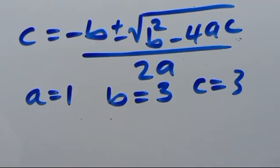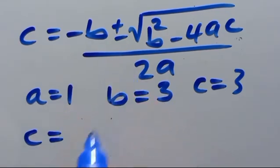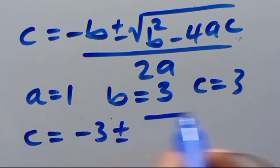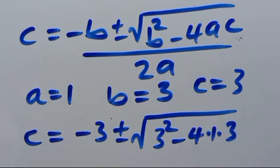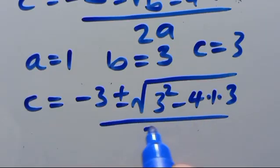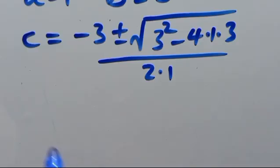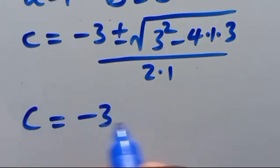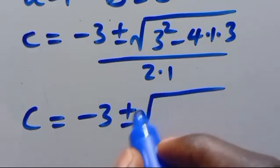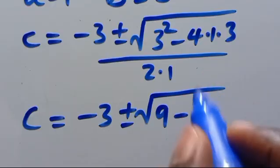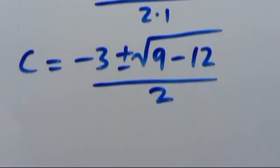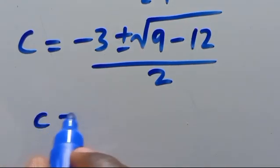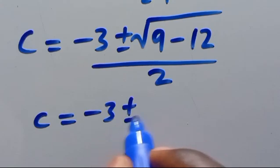Substituting in, c equals (−3 ± √(3² − 4·1·3)) / (2·1), which gives c equals (−3 ± √(9 − 12)) / 2.